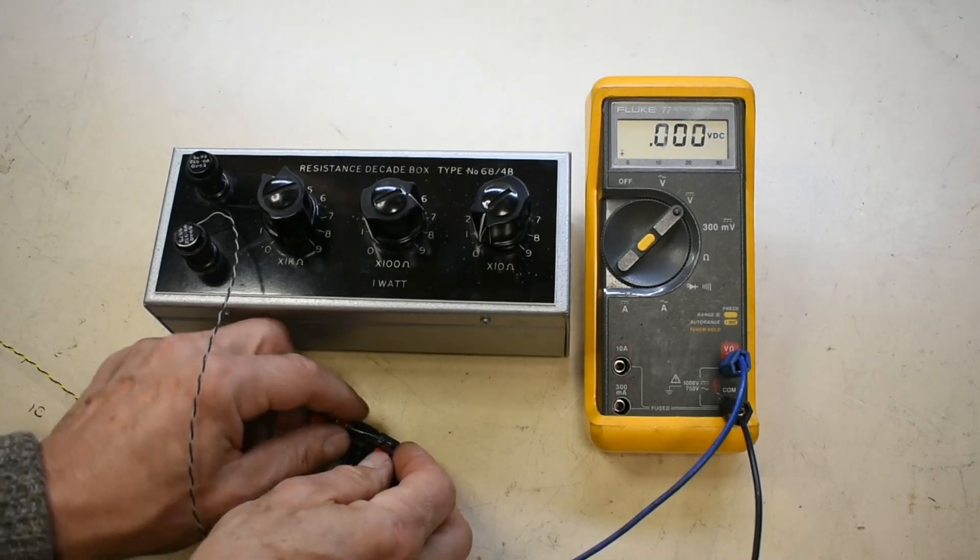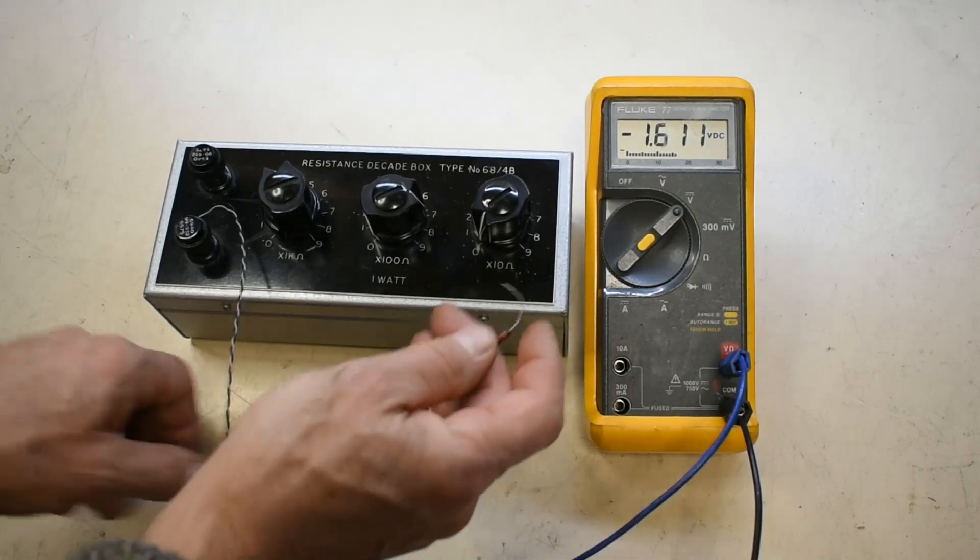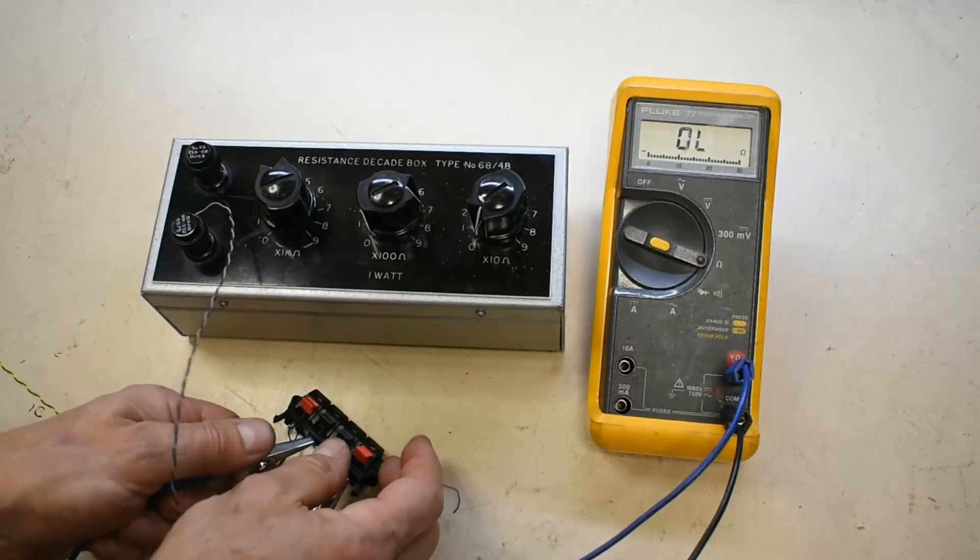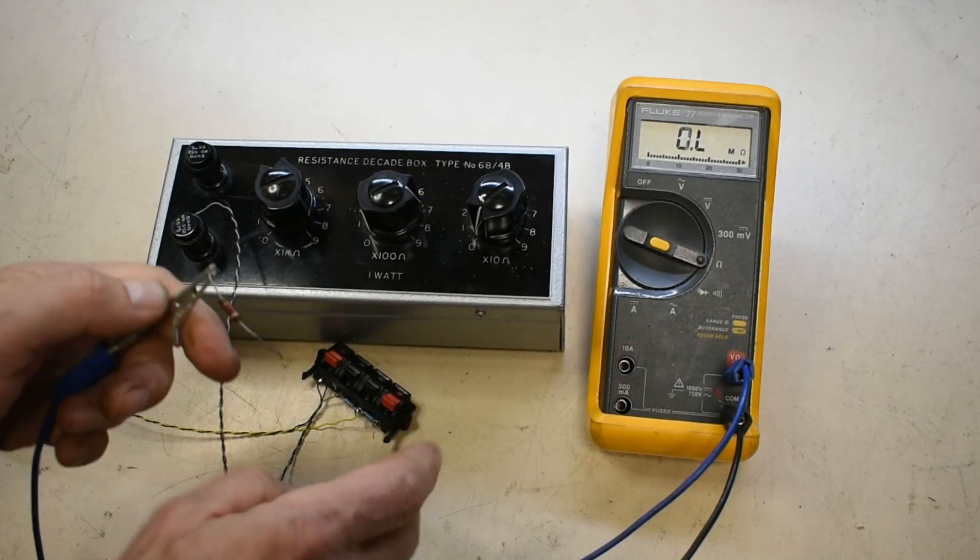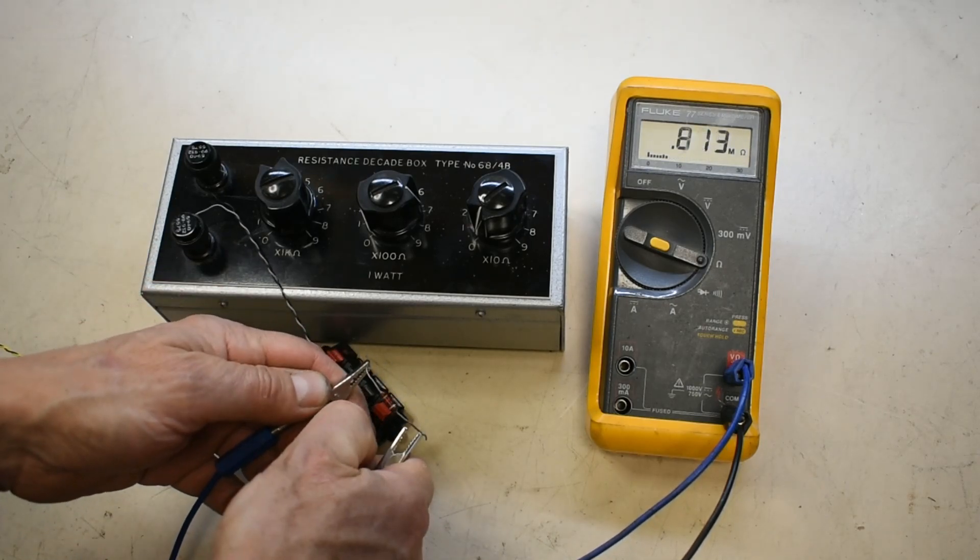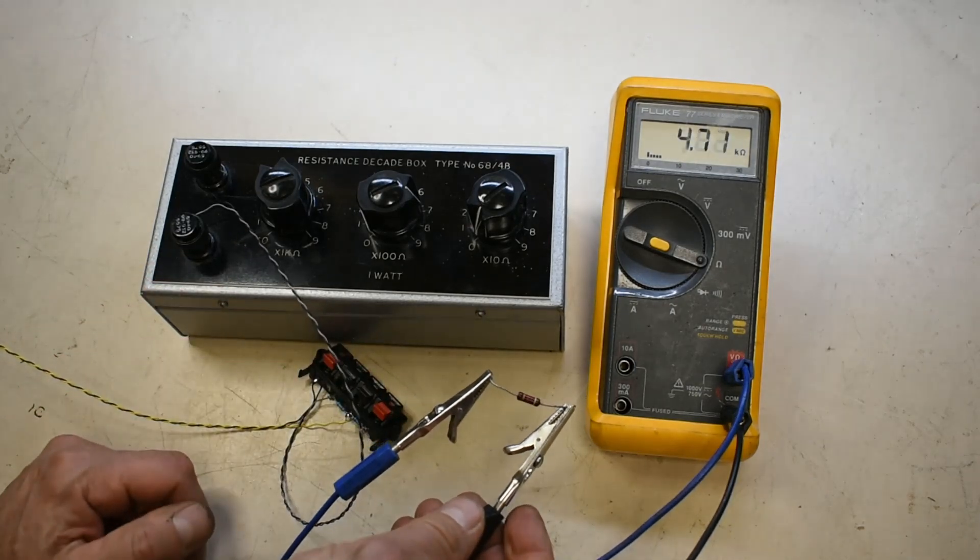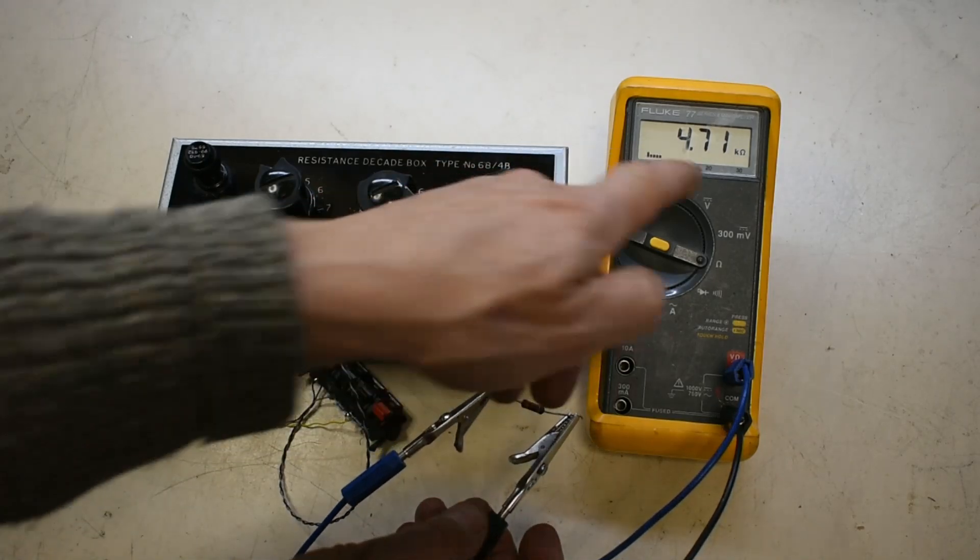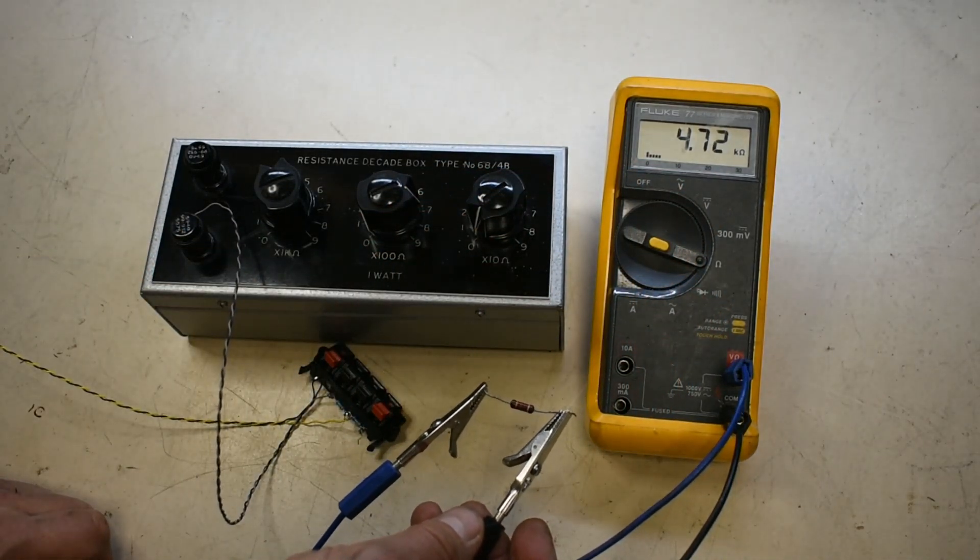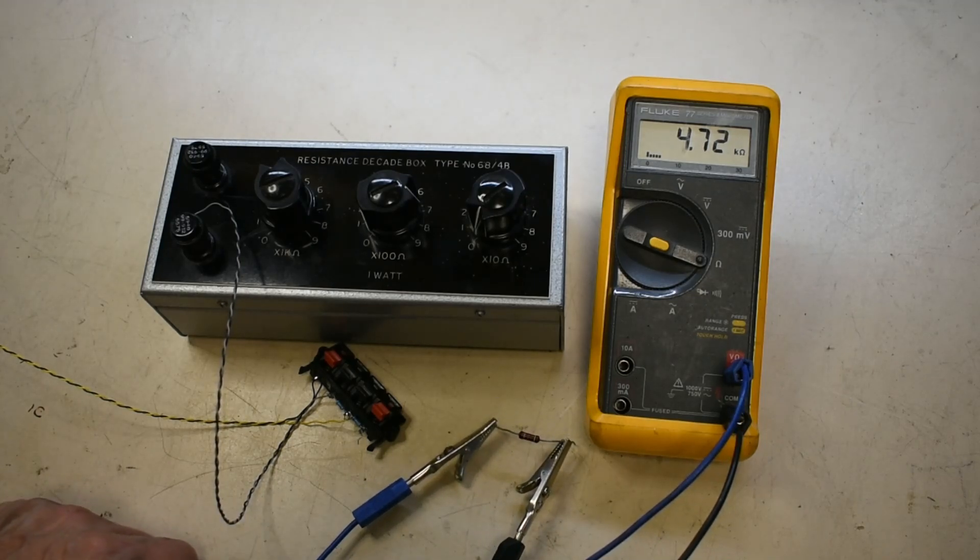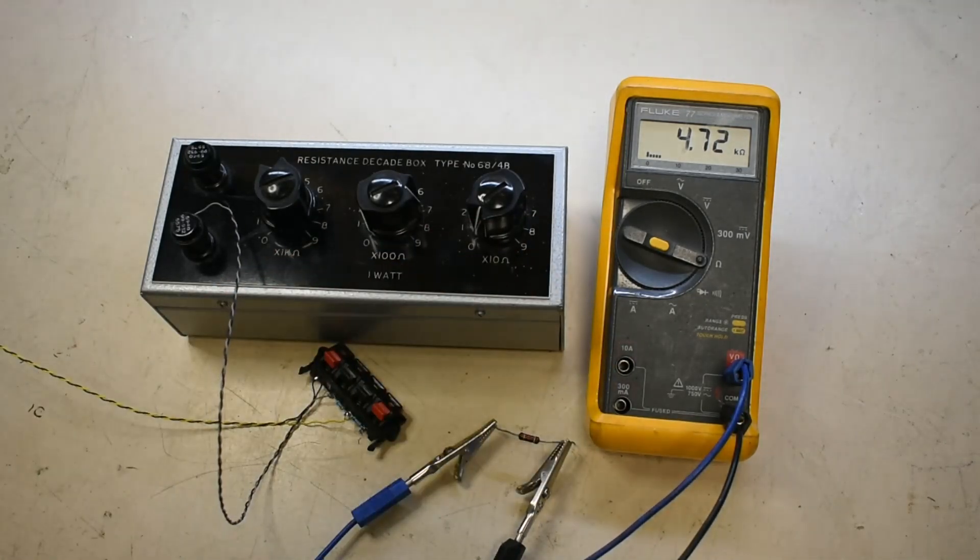So that's that resistor here. This is our unknown resistance. And out of just curiosity, what does the meter make of it as a resistor? 4.71k. So we're pretty close with our box here. And there'd be our argument, who's more accurate?